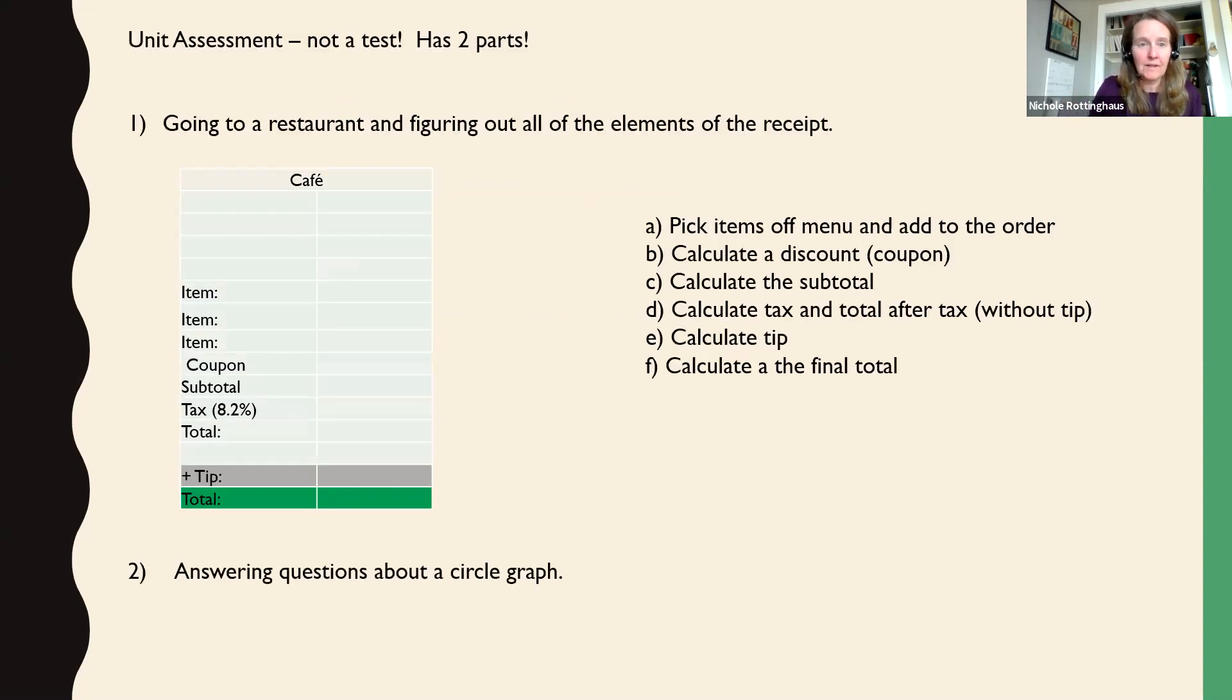There are two parts to the assessment. The first part has you going to a restaurant and figuring out all of the different elements of a receipt, all the different parts of the receipt that you would get or the bill that you would get. You're given the receipt form that you're going to fill in with all the information. And you're given a menu that you need to pick items off the menu. You're going to pick your items and you're going to list them on your receipt.